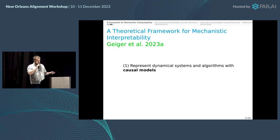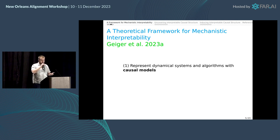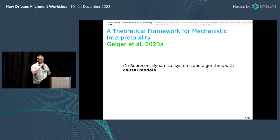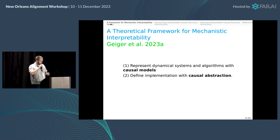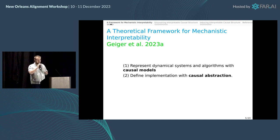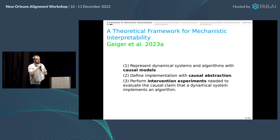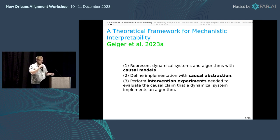The general framework for mechanistic interpretability is that we can represent both the dynamical system of a neural network at the low level and our intuitive algorithmic hypotheses about how neural networks carry out their behaviors — both as causal models. We can then understand the notion of implementing an abstract algorithm with the theory of causal abstraction, and to verify whether our hypotheses are correct, or the degree to which they are correct, we perform intervention experiments.